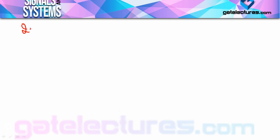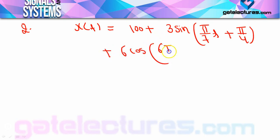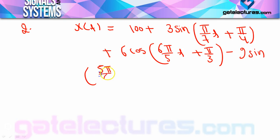Question number 2: here again a Fourier series representation is given — 100 + 3sin(πt/7 + π/4) + 6cos(6πt/5 + π/3) − 9sin(5πt/6 + π/6). The question asks whether this Fourier series representation is valid, and if valid, which harmonics are present.